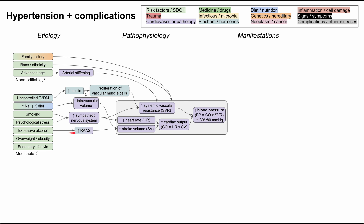Excessive alcohol has a different pathophysiology — it prominently increases your renin-angiotensin-aldosterone system (RAS), a cascade of hormones that affects how much fluid the kidneys retain. This increases stroke volume, similar to how increased intravascular volume does. Notably, increasing sympathetic nervous system activity also increases the RAS, showing how all of these mechanisms are very interconnected.